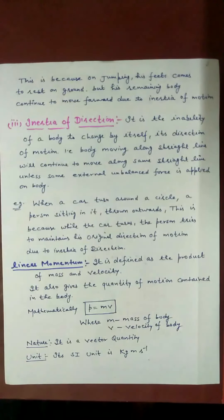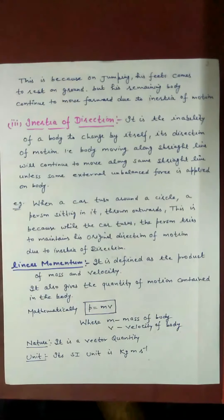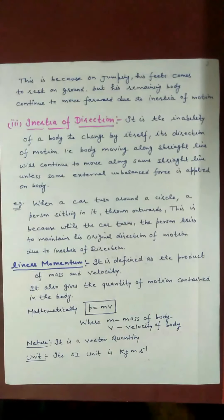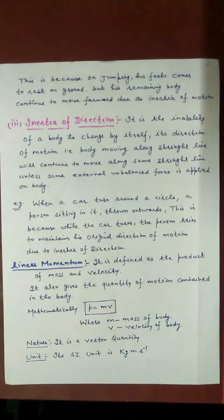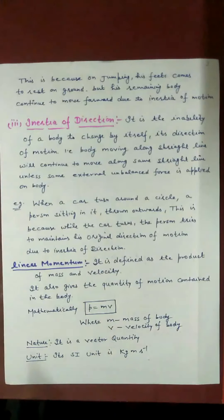Mathematically, p = m × v, where p is linear momentum. The word 'linear' is used because we are dealing with straight-line motion. Linear momentum is a vector quantity. Its SI unit is kilogram meter per second (kg·m/s), since mass is in kilograms and velocity is in meters per second.